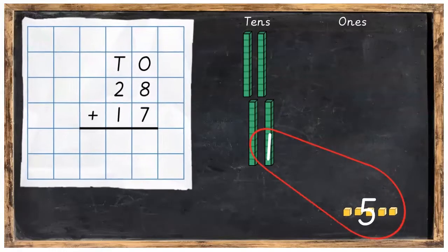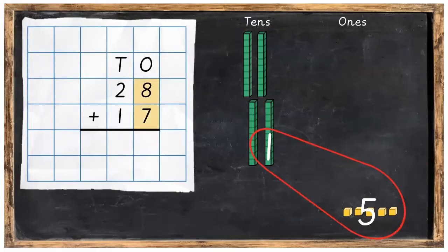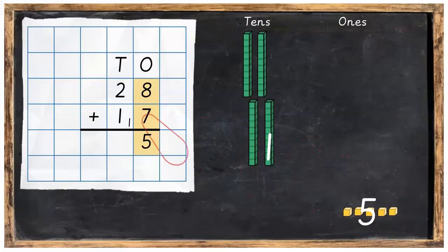If we have a look at the sum now, this looks like this: 8 plus 7 is 15, but that's not going to fit in there, so instead what we do is we put down the 5 and bring over the 1 ten into the tens column.